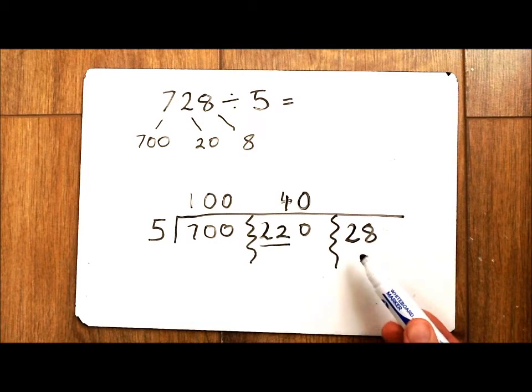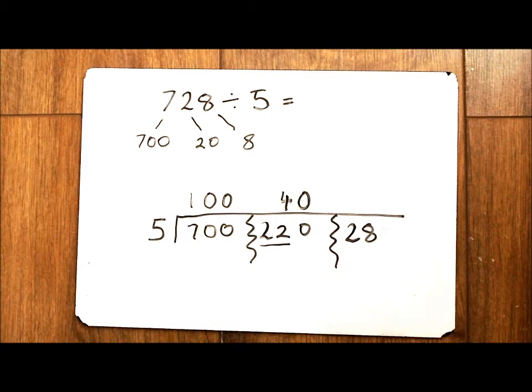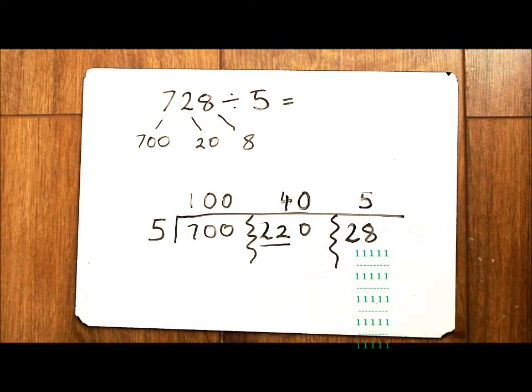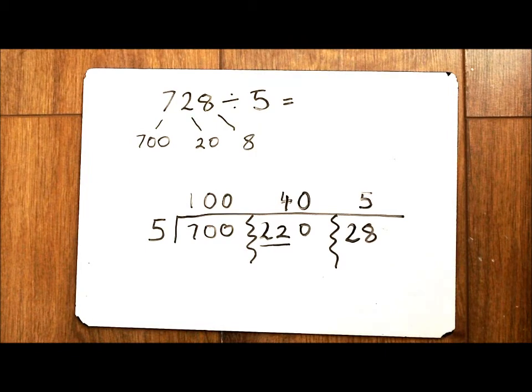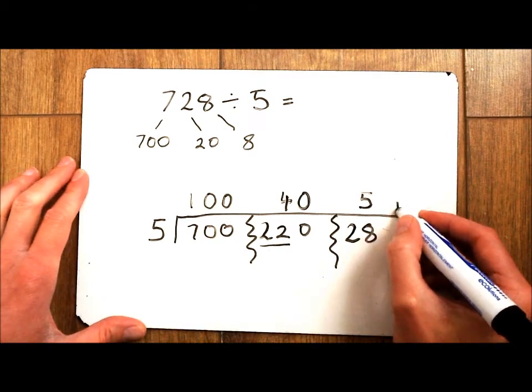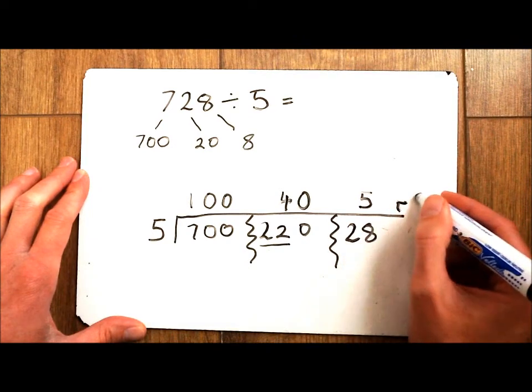I've now got 28 ones to share out equally among my 5 groups. So I know doing this in my head that I would have 5 ones in each of my 5 groups. But again I'd have some left over. I'd have 3 left over. Which we write as R for remainder 3.